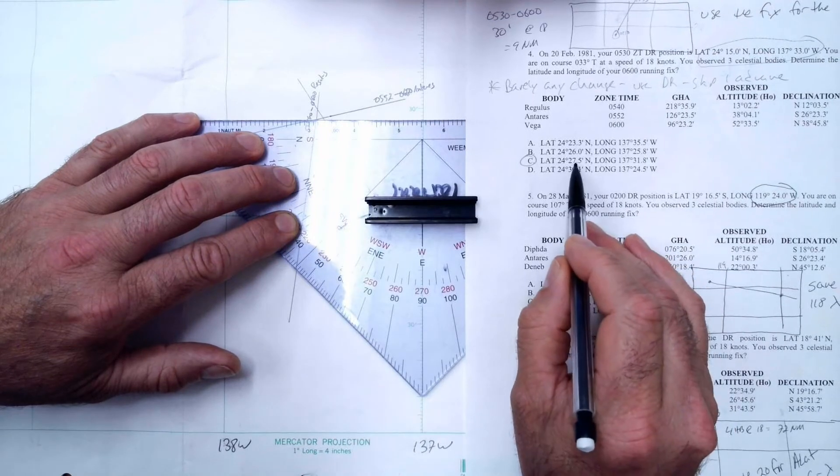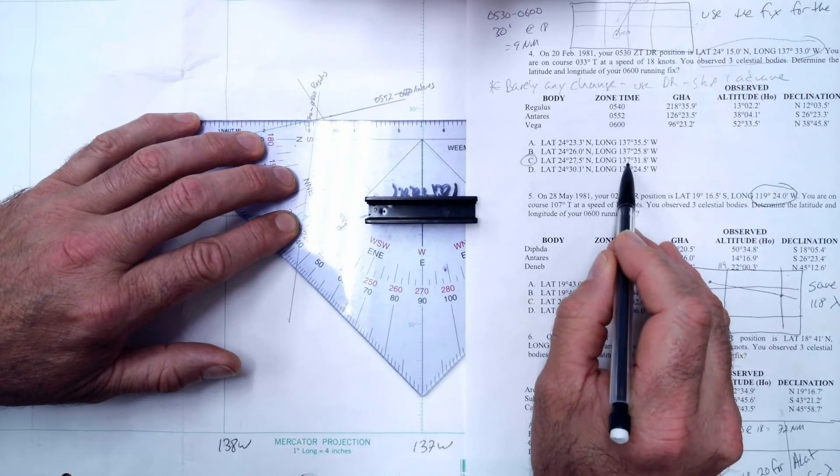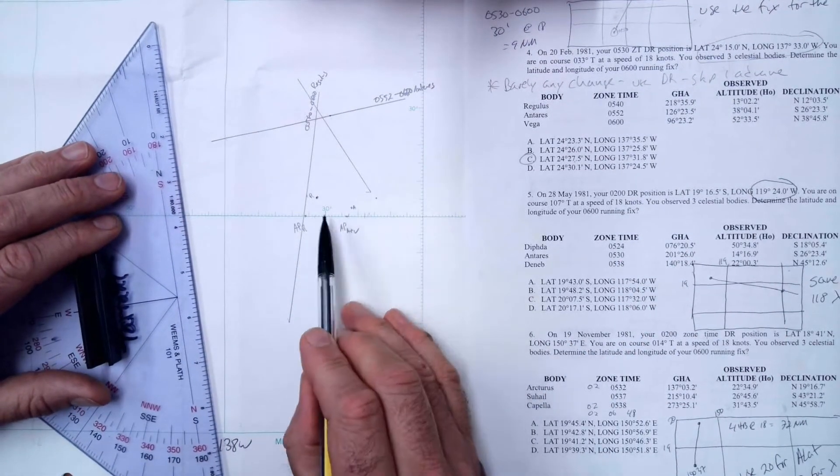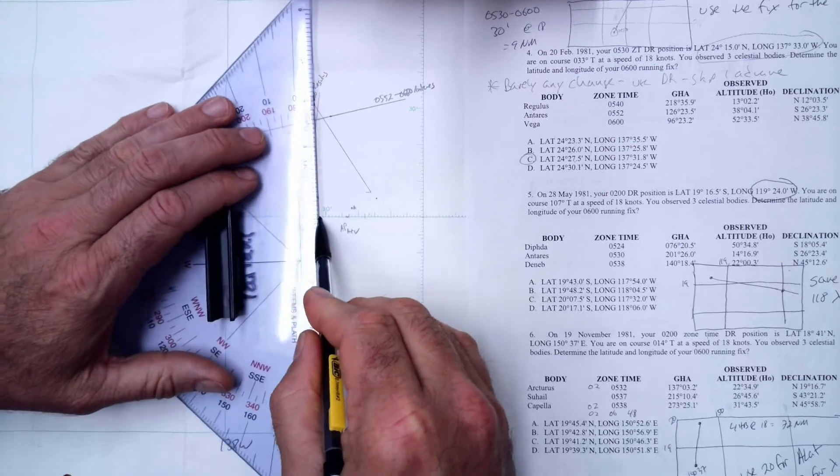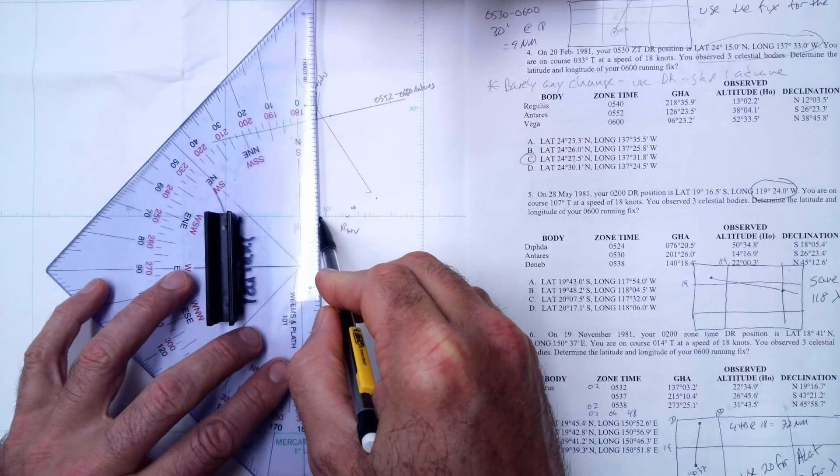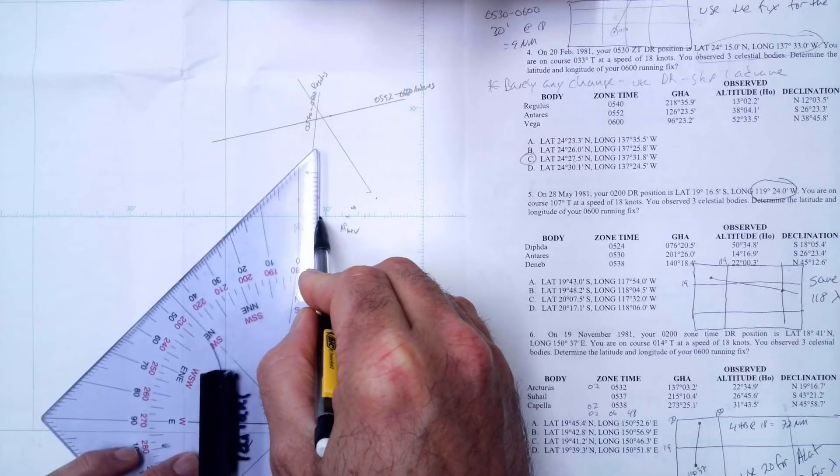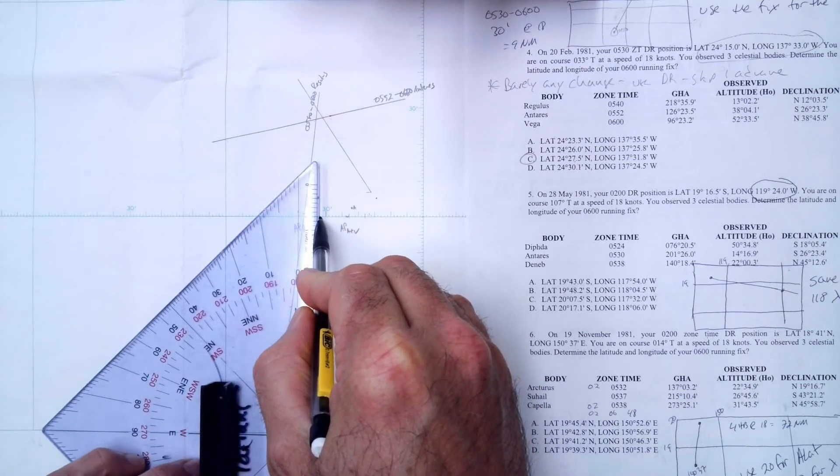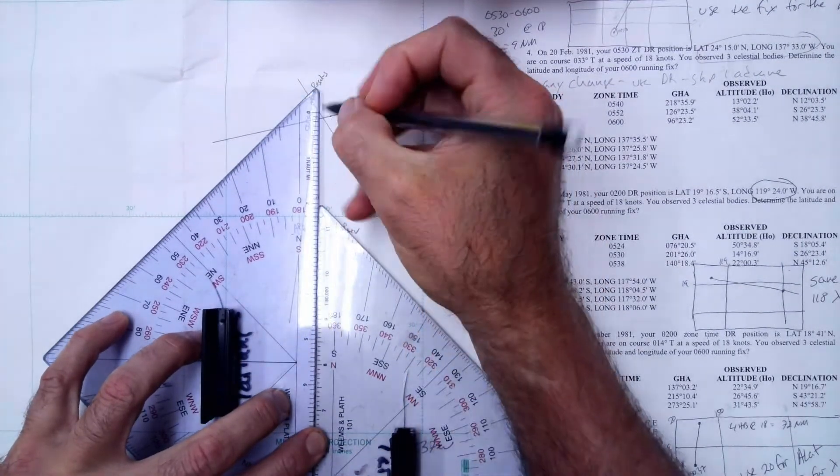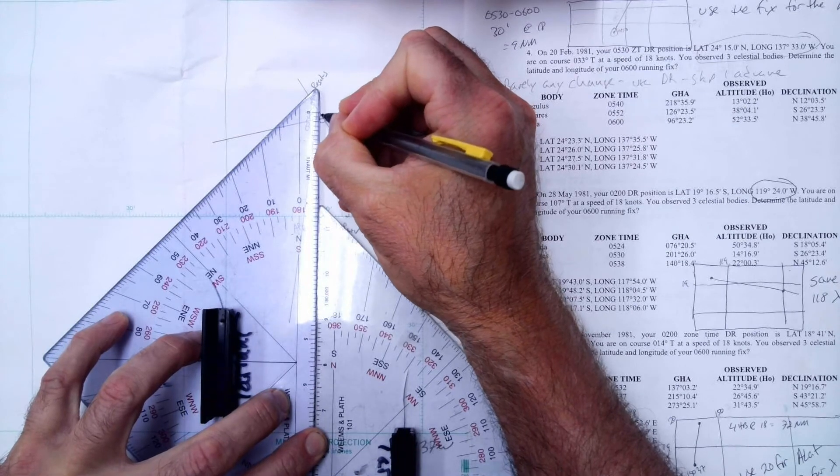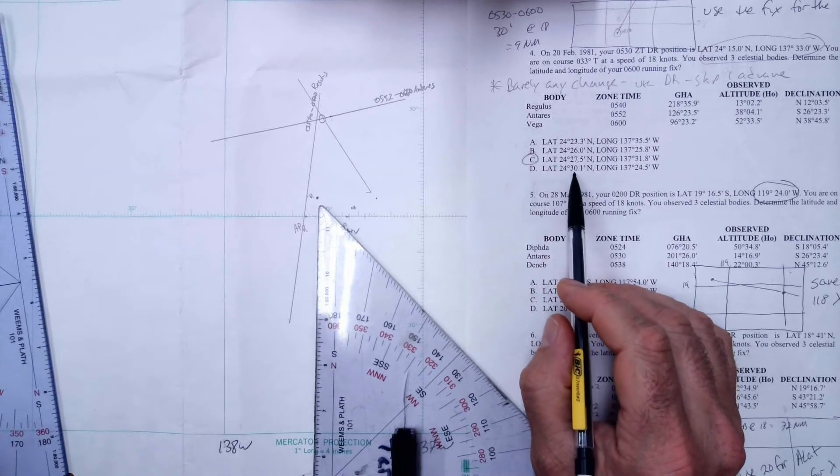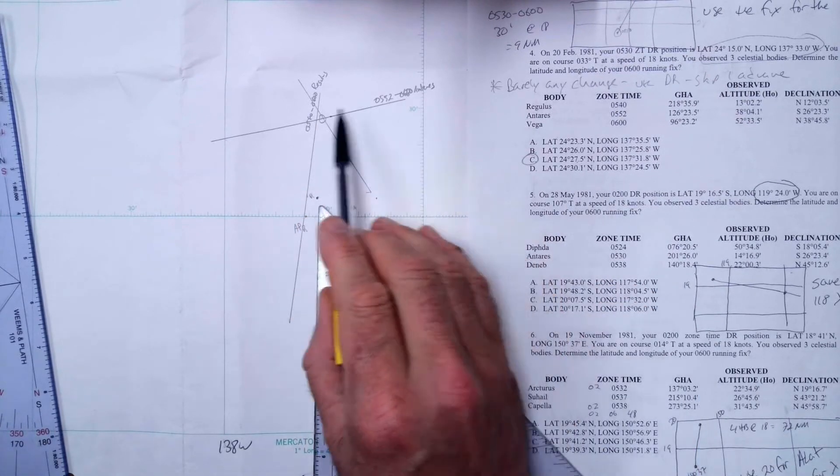Let me check this one then: 137 31.8. So here is 137, here's 30, here's 31.8 right there. And when I do that... yeah, look at that, that's really close to right there.